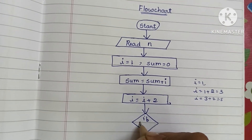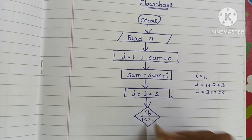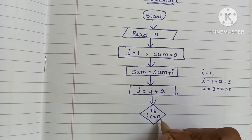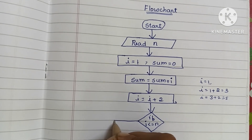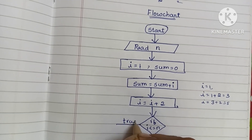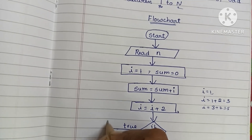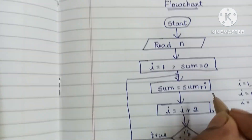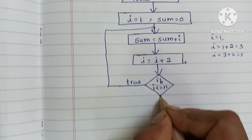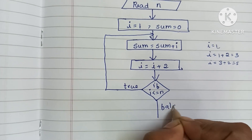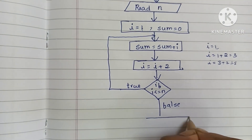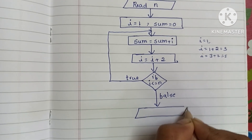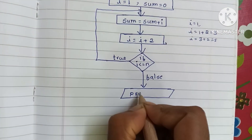Next we have to check if i value is less than or equal to N. If this condition is true, then we execute the statement sum = sum + i. If this condition is false, we print the sum.